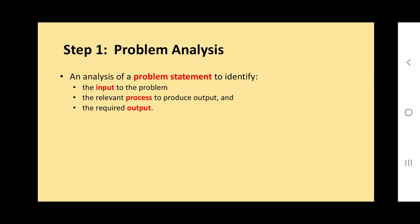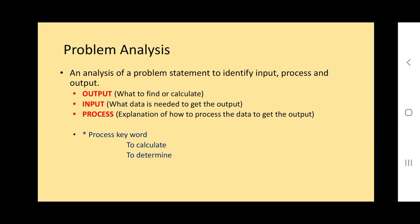What is problem analysis? Step one is more commonly known as IPO analysis. It's a problem statement to identify the input of the problem, relevant process to produce output, and the required output. Usually the question already gives the output - what is asked is the output. So what we need to find is the input and process. Output is what to find, to calculate, or to determine. Input is the data needed to calculate the output. Process is what steps you use to find the output. The keyword for problem analysis is 'to determine' or 'to calculate.'